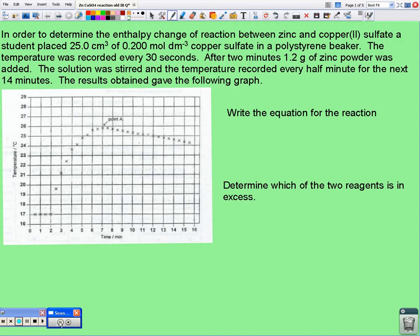Well, the reaction we can see is between zinc and copper 2 sulfate, and the first thing we're asked to do is to write a chemical equation for the reaction.